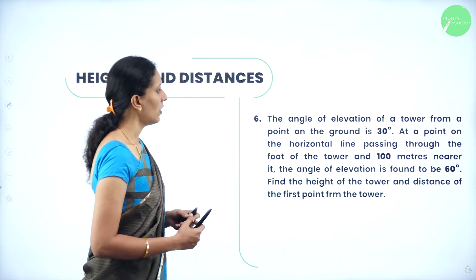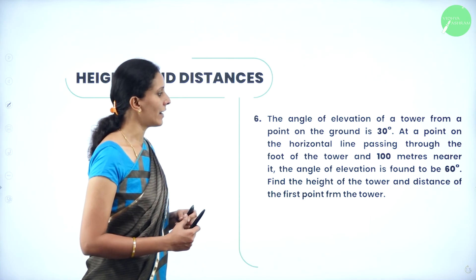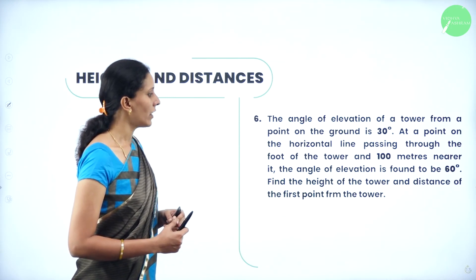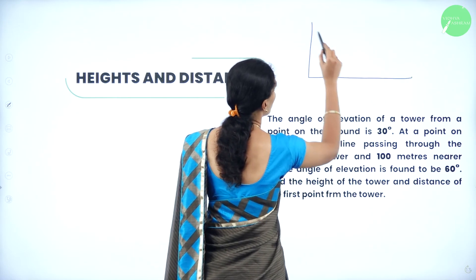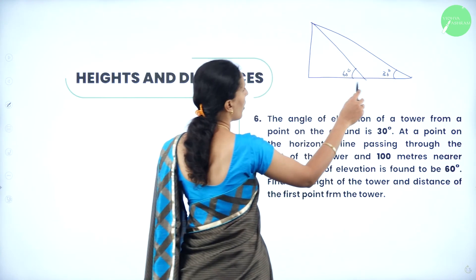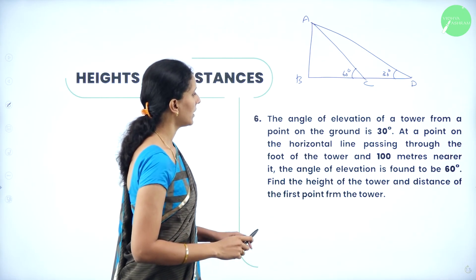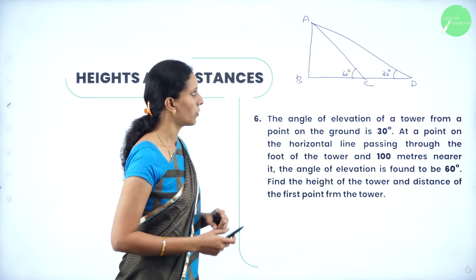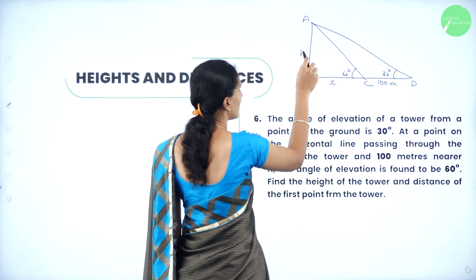Next question: the angle of elevation of a tower from a point on the ground is 30 degrees. At a point on the horizontal line passing through the foot of the tower and 100 meters nearer, the angle of elevation is found to be 60 degrees. Find the height of the tower and the distance of the first point from the tower. We have a tower and two points. Let me name these A, B, C, D. The gap between the two points is 100 meters. Let the nearer distance be X and the height be H.